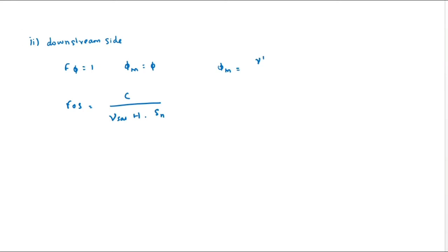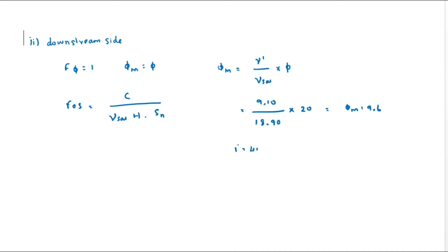The mobilized friction angle is: φ_m = (γ_dash / γ_sat) × φ. With γ_dash = 9.10, γ_sat = 18.91, and φ = 20 degrees, we get φ_m = 9.6 degrees. For i equals 45 degrees and φ_m equals 9.6 degrees, the stability number Sn from the chart equals 0.130.